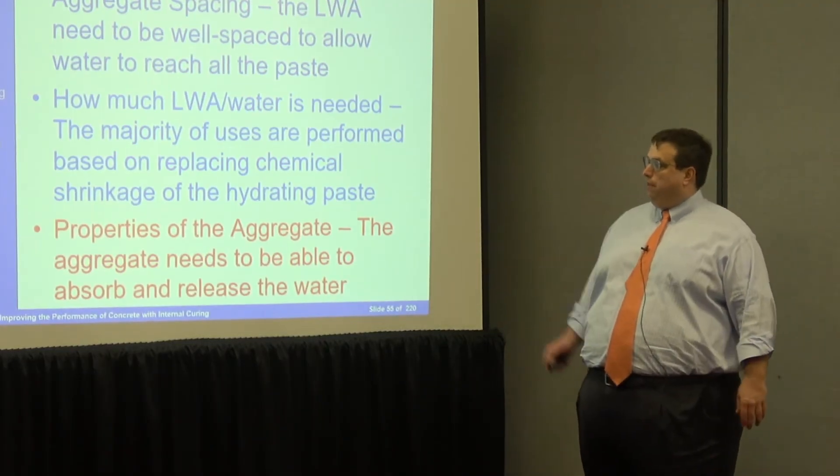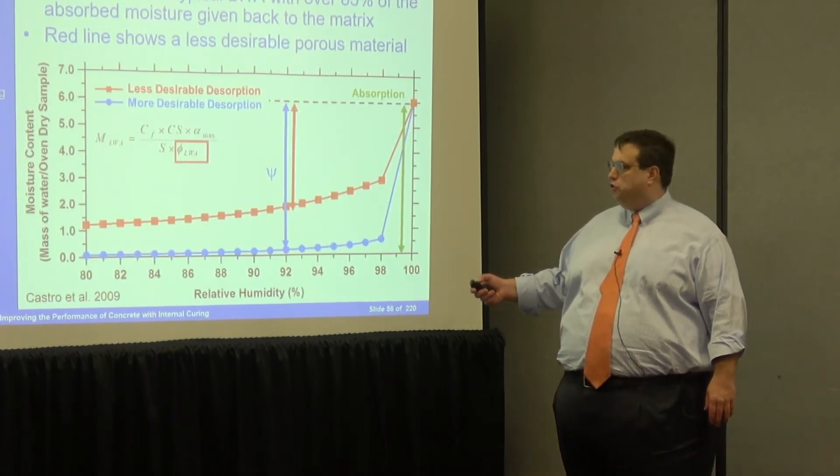The aggregate needs two main properties. First, it needs to have pores to hide the water in — it needs to be a porous aggregate. The second is more subtle: the aggregate must desorb the water. Desorption is the ability of the water to leave the aggregate. Believe it or not, that's actually a measurable property — how water leaves the aggregate.